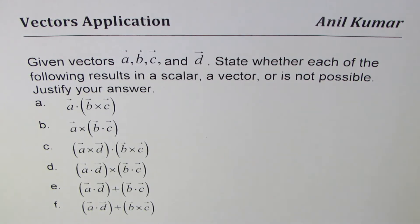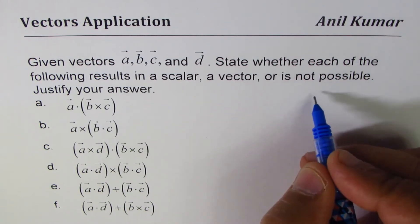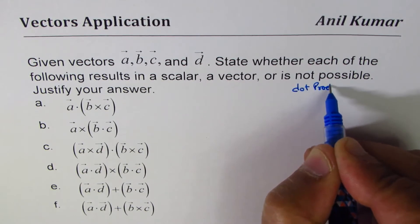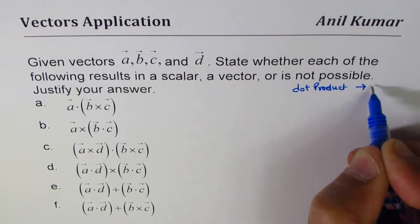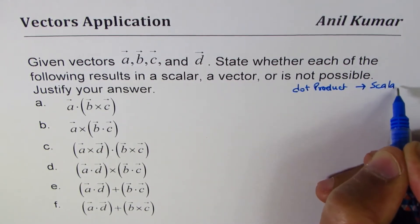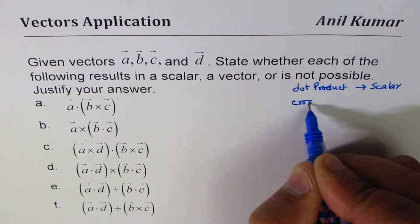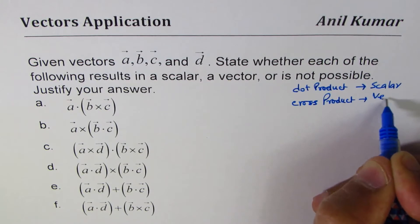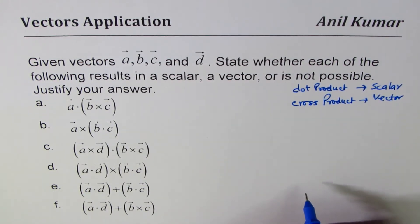Now what you need to think about is that whenever we have a dot product, dot product results into scalar. And cross product results into vector. That is very important.